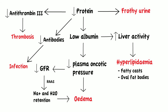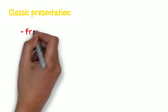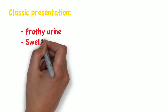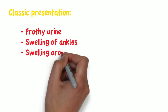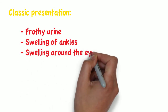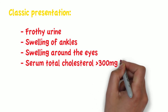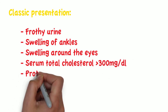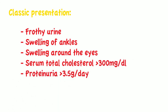The classic presentation of a patient with nephrotic syndrome includes frothy urine, swelling of the ankles, swelling around the eyes, a serum total cholesterol of over 300 milligrams per deciliter, and proteinuria of more than 3.5 grams per day.